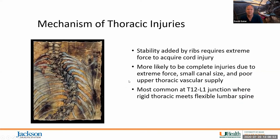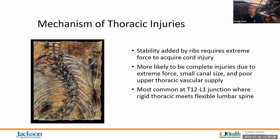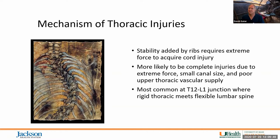For thoracic injuries, essentially the same mechanisms apply. The major difference is that the ribs provide additional structural support. Unless you damage the rib cage, it's unlikely you'll have a significant thoracic injury from trauma. If you do, it means a huge force caused both rib fractures and thoracic spine fractures. Additionally, the upper-mid thoracic region has a less robust vascular supply, a relatively small canal size, and a watershed zone — so mid-thoracic injuries from trauma are almost always complete.